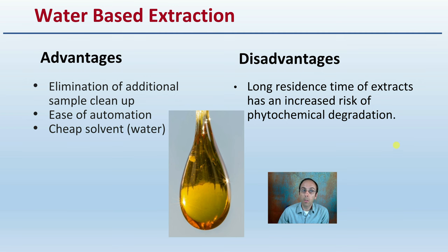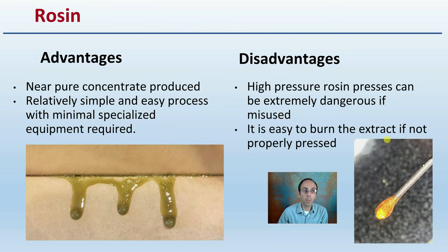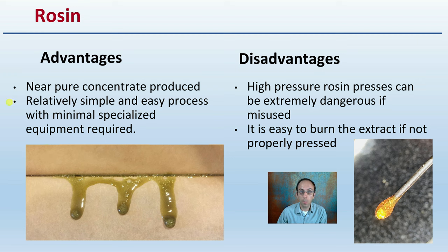If water extraction is not for you, there's rosin. The advantage of rosin is it's a near-pure concentrated product that's produced through a relatively simple and easy process with minimal specialized equipment. However, the downfall is that high-pressure rosin presses can be extremely dangerous if misused, and it's very easy to burn the extract if not properly pressed, so there are stepwise protocols to follow.